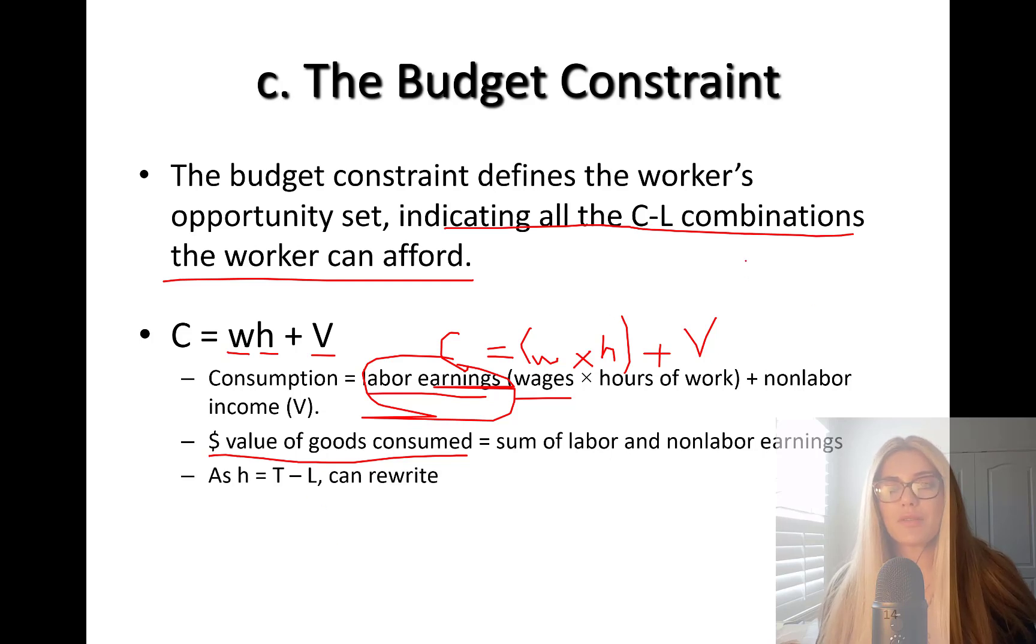Remember, hours worked plus leisure needs to sum to the total time available. So T is the total time available. Basically, your hours of work needs to be total time minus your leisure. That's where the hours work leisure trade-off comes up.